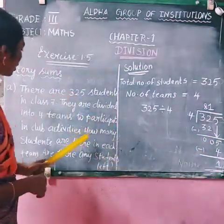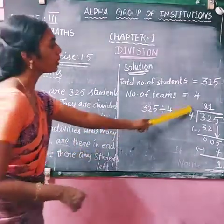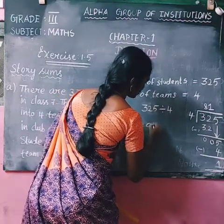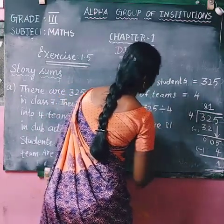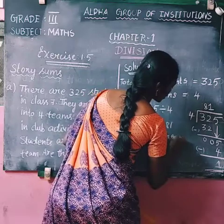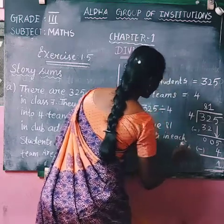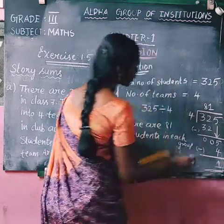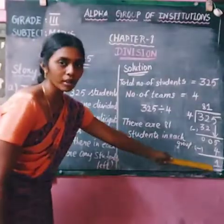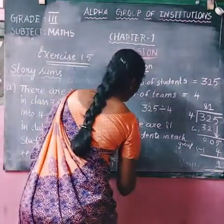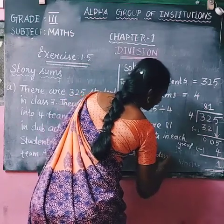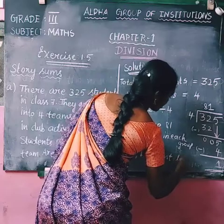So the answer: there are 81 students in each group, and 1 student is left over.